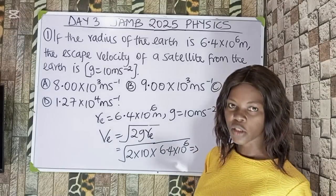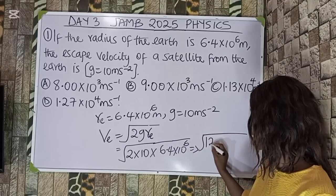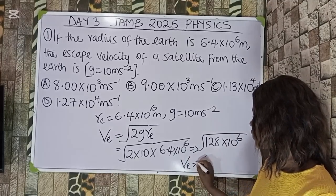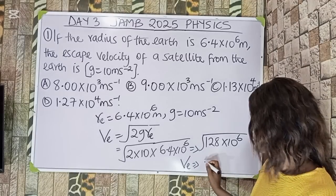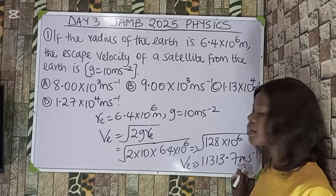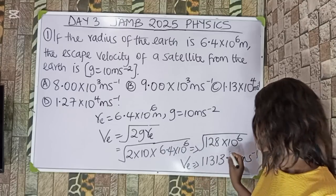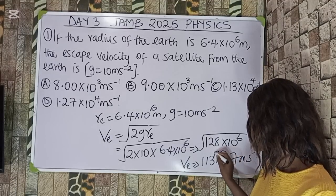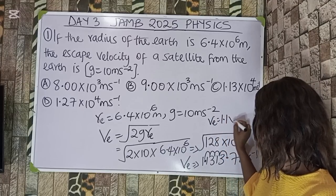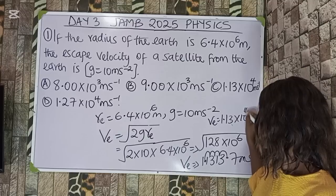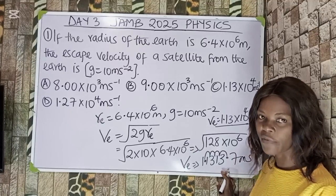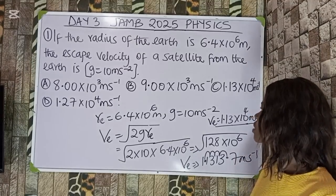Working it out, we get the square root of 1.28×10⁸, which gives us 11,313.7 meters per second. Because the answer is left in standard form, we count the decimal places: 1, 2, 3, 4. So v_e becomes 1.13×10⁴ meters per second. The correct option is option C.